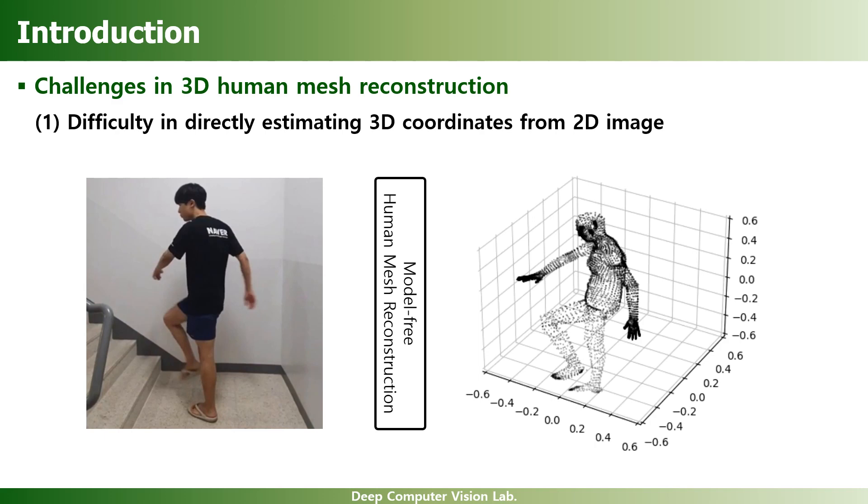To bridge this gap between 2D and 3D spaces, we give intermediate guidance to the network by using the proposed point-guided feature sampling.